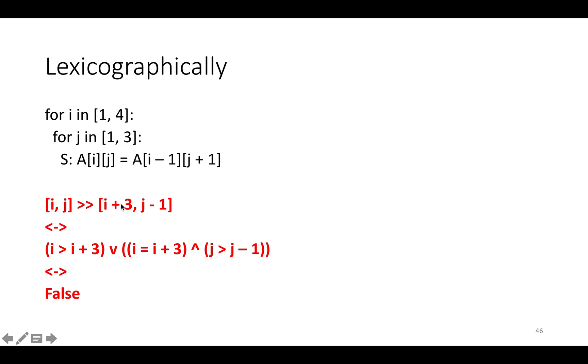so the first component is greater, the first component on the left is greater than the first component on the right, or i equals i+3 and j is greater than j-1. And in our case, i is not greater than i+3, so this is false.